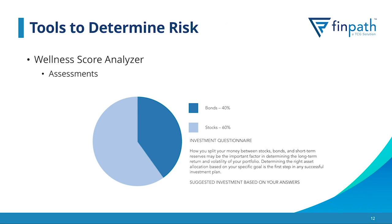Inside of the FinPath platform, there is a very useful tool to understand your risk tolerance. If you go into the wellness score analyzer and click on assessments, you will find a risk tolerance assessment available to you. You'll be able to answer 11 questions, which will aggregate a score and present you with an ideal investment portfolio. In my example shown on the screen, after answering the questions I was recommended a 60% stock, 40% bond portfolio. You can then take that information, look at your group retirement plan or IRA, and choose investments that closely match this recommended investment allocation.